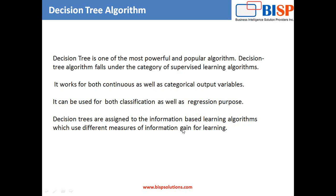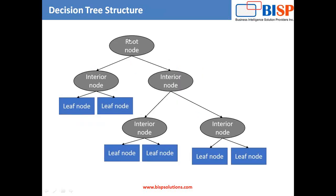The most important attribute is placed at the root node. For evaluation, we start at the root node and work our way down the tree by following the corresponding nodes. We have interior nodes and we validate based on certain conditions — if a condition is satisfied it moves toward that node, else it moves to another node, and this process continues until a leaf node is reached, which contains the prediction or the outcome of the decision tree.